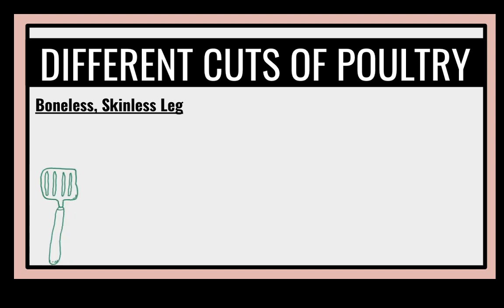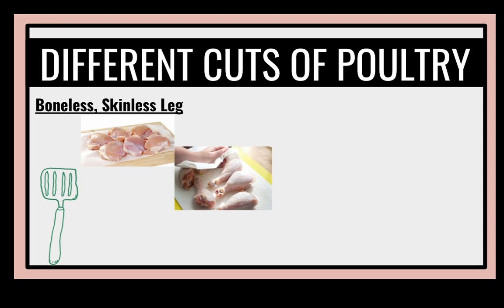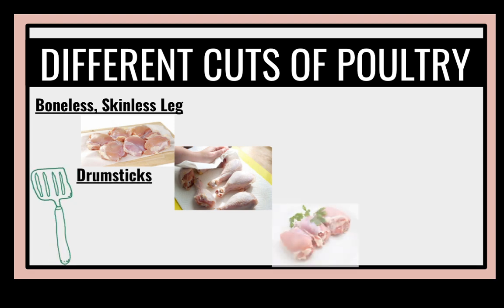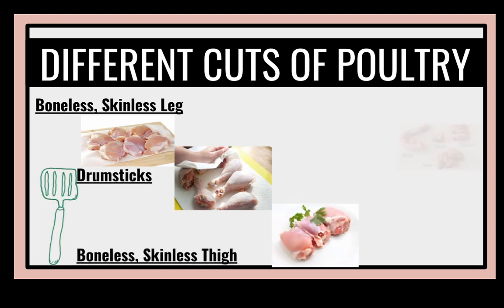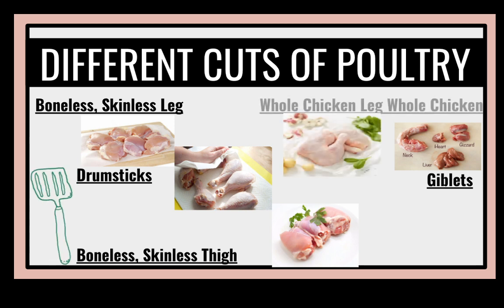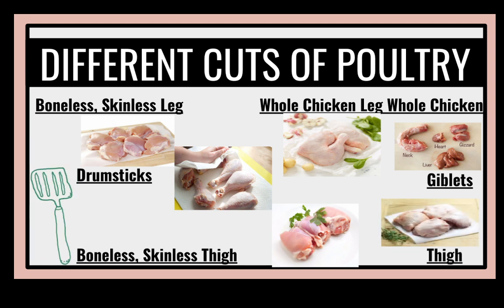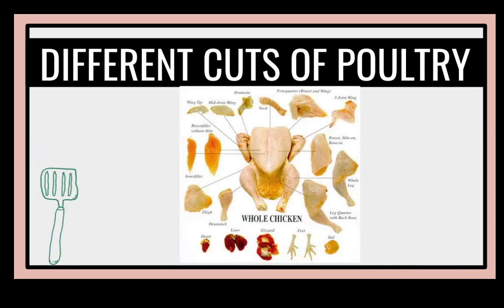For the legs, we have boneless skin legs, drumstick, and boneless skinless thigh. The giblets include the neck, liver, heart, and gizzard. We also have the whole chicken leg, whole chicken, and of course the thigh. These are the parts of the whole chicken.